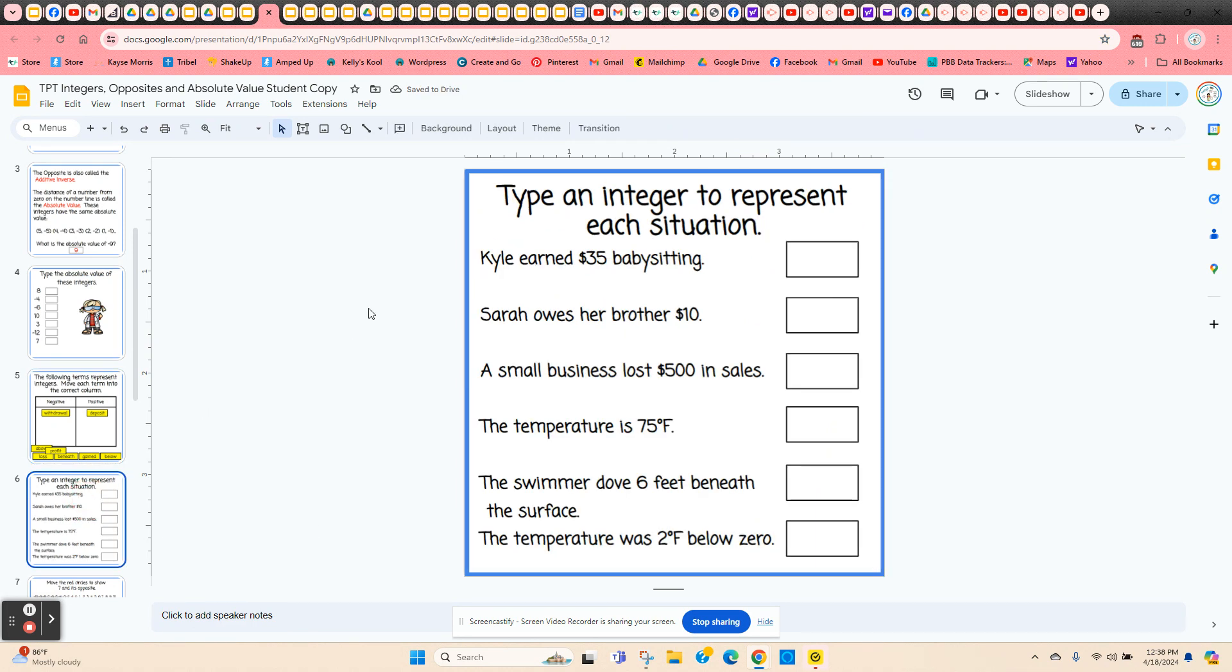Then we're going to give the students some real life situations, and they're going to type in the integer that represents each of these. So diving below the surface would be a negative number. Above zero as temperature would be positive, and so on.